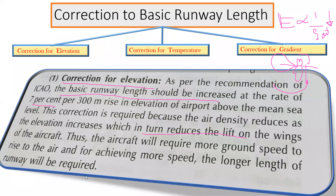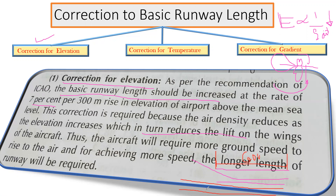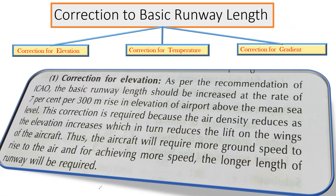To illustrate: if no correction were applied, say a 600 meter runway allows normal takeoff. But due to elevated location, that length is insufficient — the runway must be extended. With the longer runway, the aircraft can build up enough speed and achieve the necessary lift for takeoff. That is why correction for elevation must be applied.